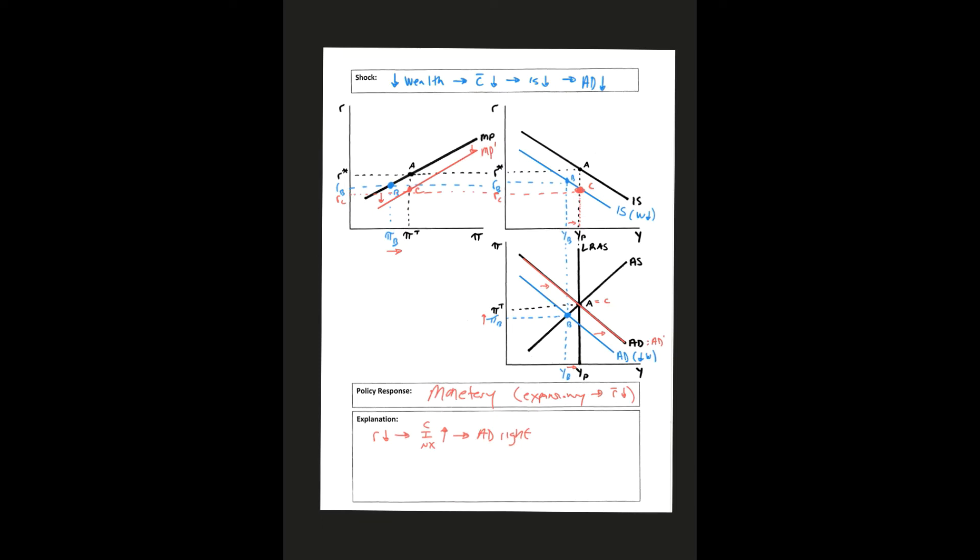We have point A, B, C in the MP curve, A, B, C in the IS curve, and then A, B, and then back to C in the aggregate demand aggregate supply curve.